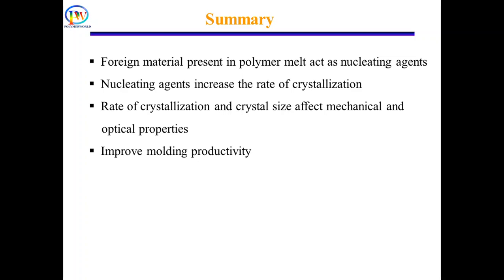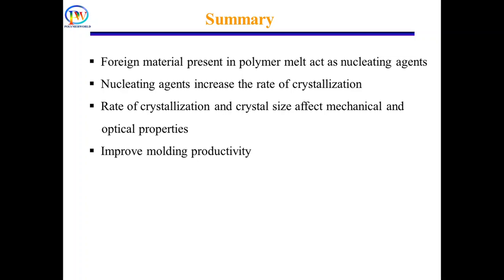To summarize: nucleating agents are foreign materials present in the polymer melt that increase the rate of crystallization and improve mechanical and optical properties of polymers. However, the efficiency of nucleating agents depends on their particle size, morphology, chemical structure, and interfacial interaction with the polymer matrix. Another important factor is dispersion — due to the small size of many nucleating agents, they have a strong tendency to form large aggregates or chunks, which limits their efficiency.